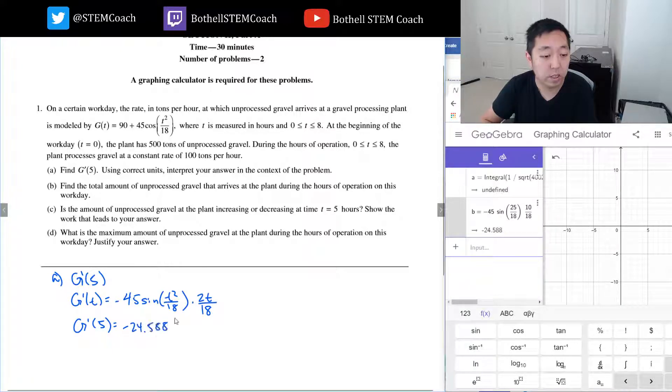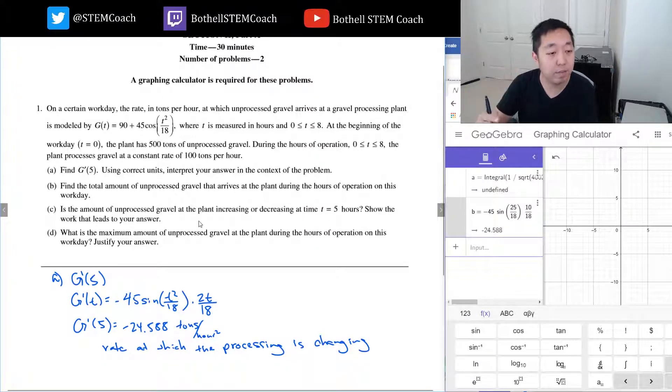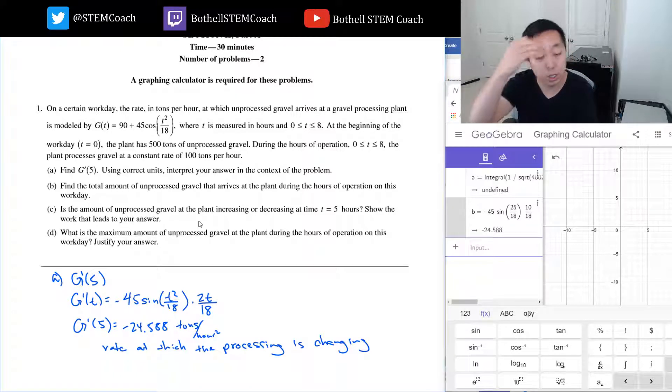So I get minus 24.588. This is the rate of change of g. g is tons per hour, so this would be tons per hour squared. This is the rate at which the processing is changing. This is the rate of change, so basically whatever rate that they're processing at five hours, it's going down in terms of how much they're processing per hour.